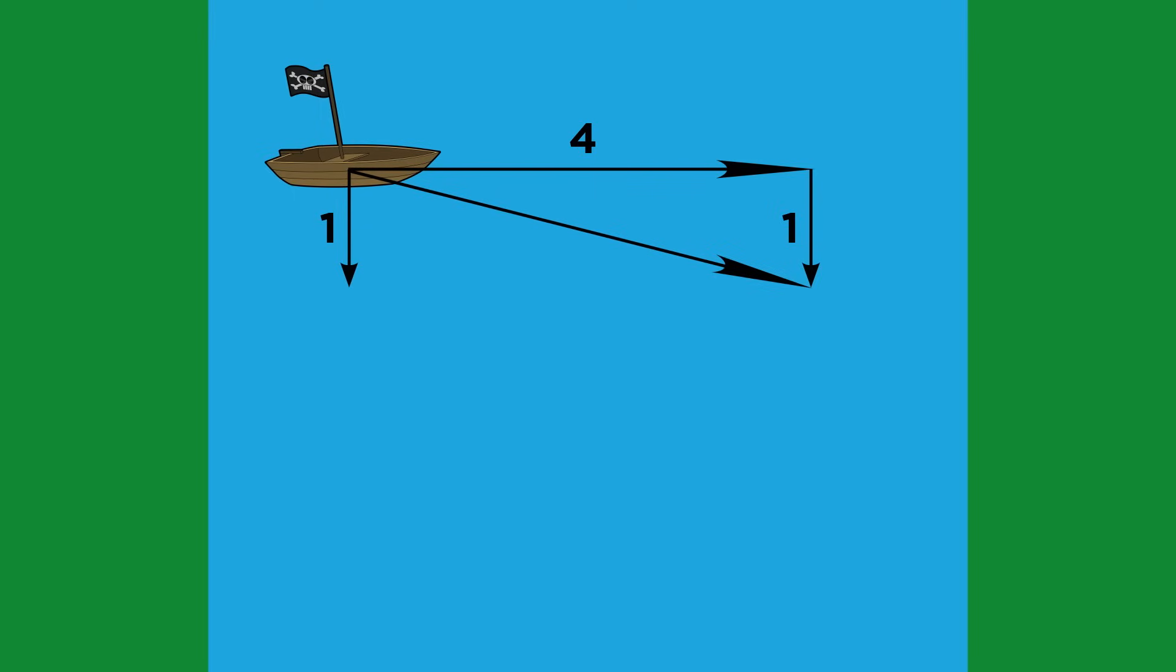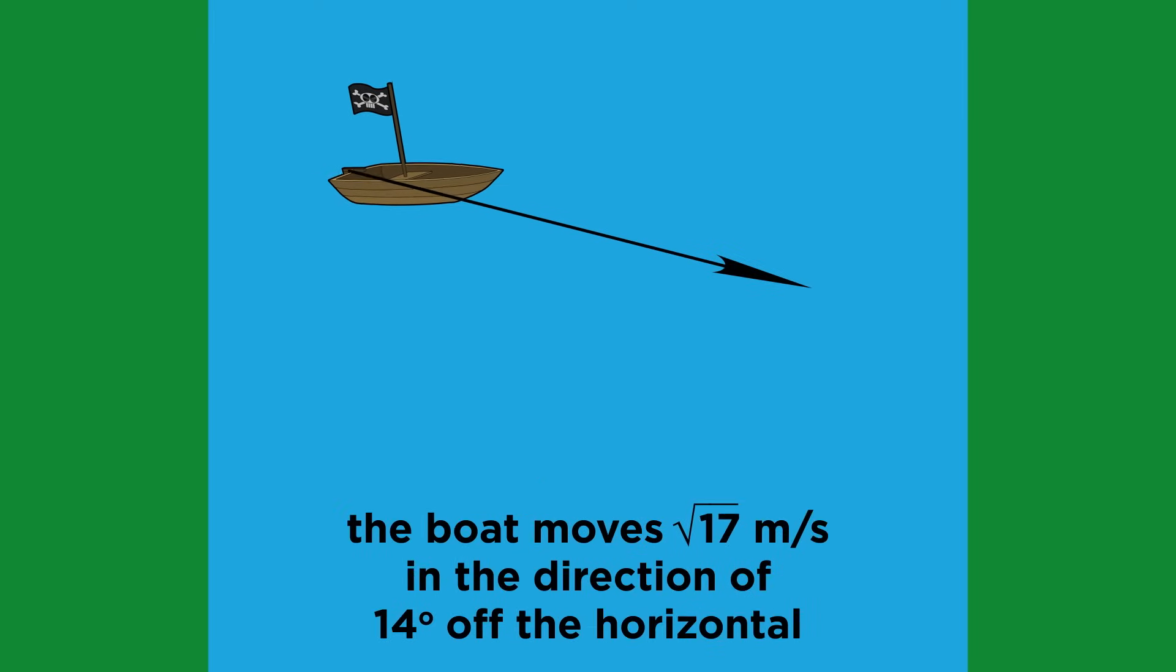Or we could have left it where it was, made a rectangle using the two vectors, and then just drawn the diagonal. Either way, this vector sum will have a magnitude of root seventeen. To find the angle from the horizontal, we can use any trig function we like. Say we use tangent. Tangent theta will be opposite over adjacent, or one fourth. Taking the inverse tangent, theta must be fourteen degrees. So the boat is moving at a speed of root seventeen meters per second in the direction of fourteen degrees off the horizontal.